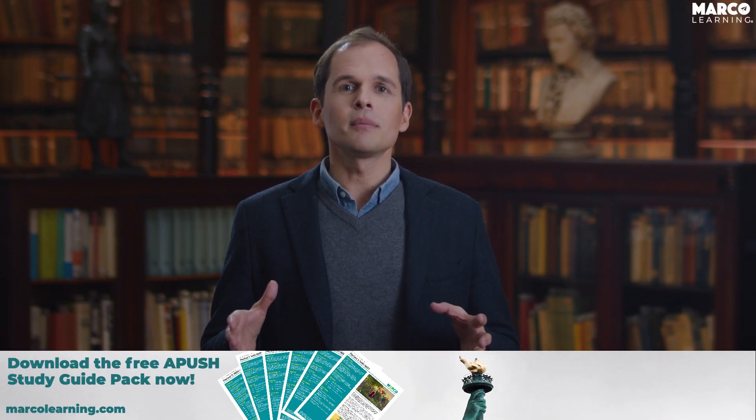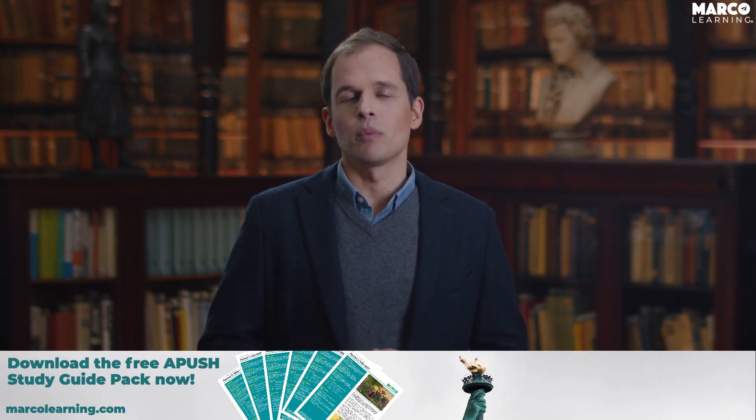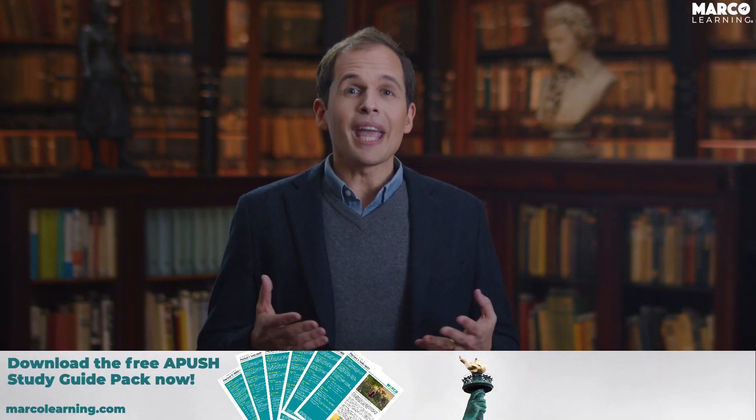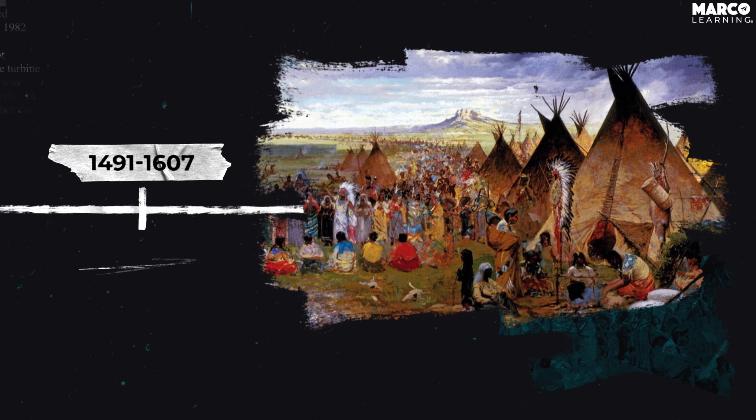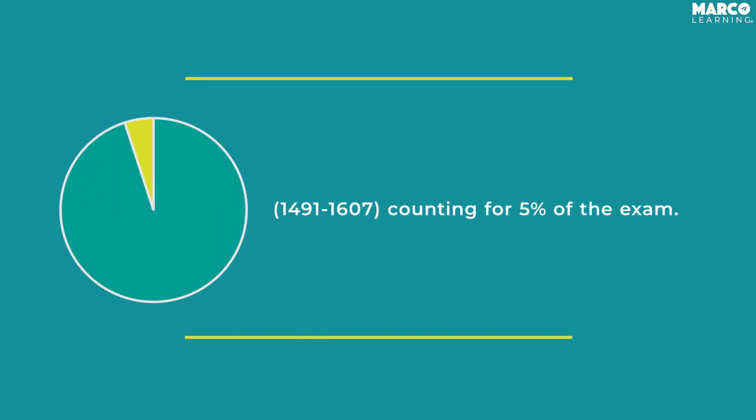Let's start at the beginning of the curriculum in time period one. The AP U.S. History exam is divided into nine time periods, and period one runs from 1491 to 1607. Before you spend too much time here, remember this is only 5% of the official curriculum — both what teachers should cover in school and 5% of the test.